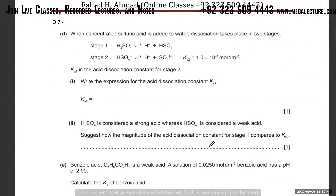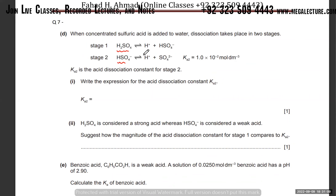Here's another question. When you have a diprotic acid, remember it's going to act as two acids. It ionizes first releasing an H⁺ and producing HSO₄⁻. Then HSO₄⁻ releases the second H⁺. So it's basically behaving as two different acids — two completely different species each releasing H⁺ ions.